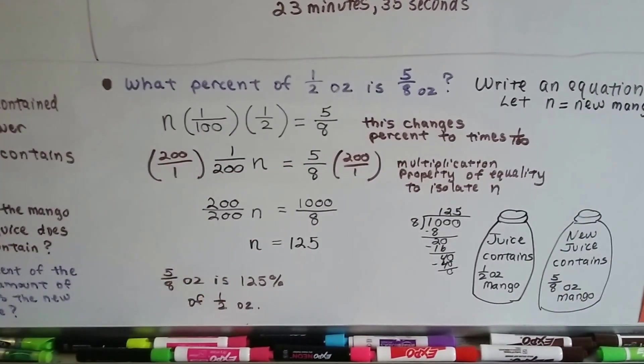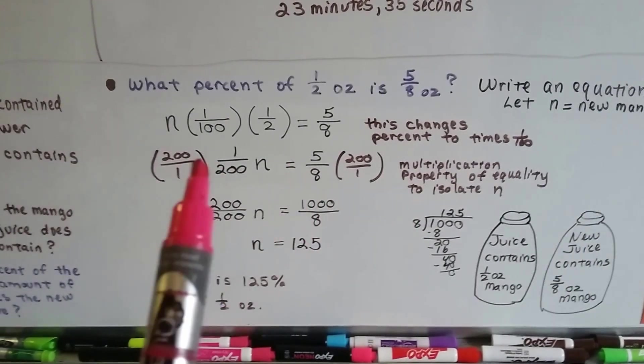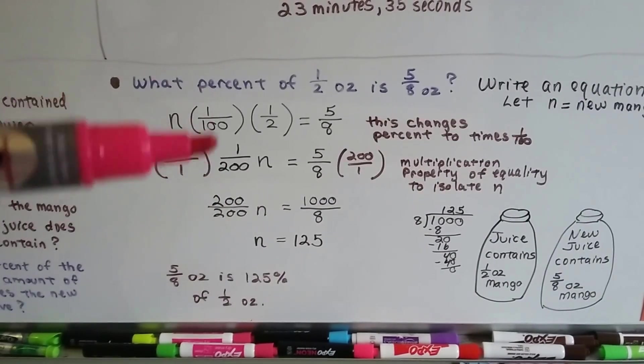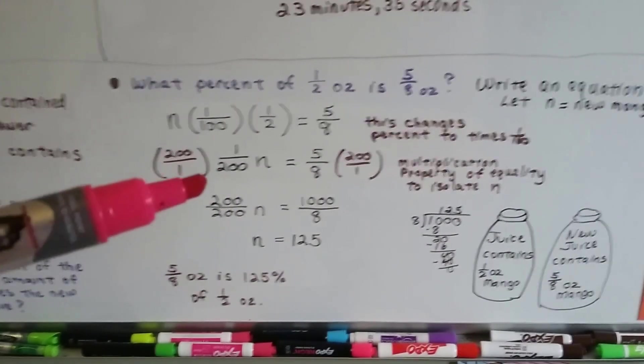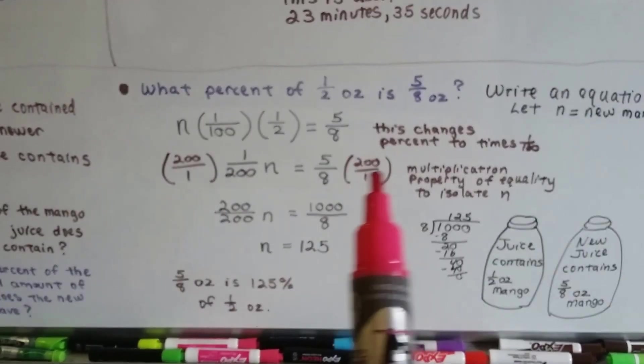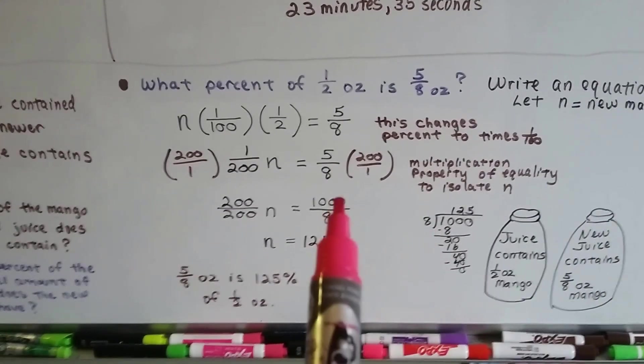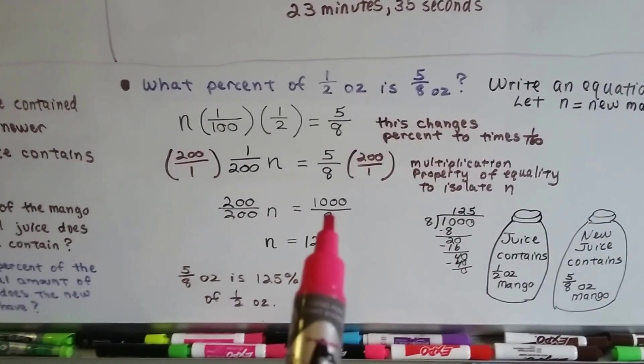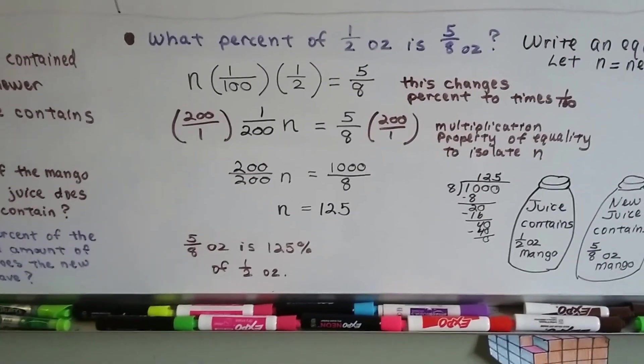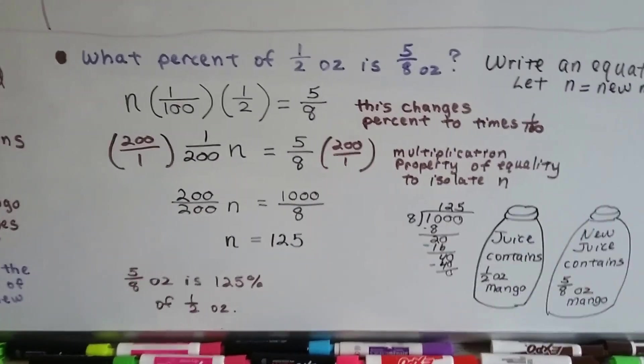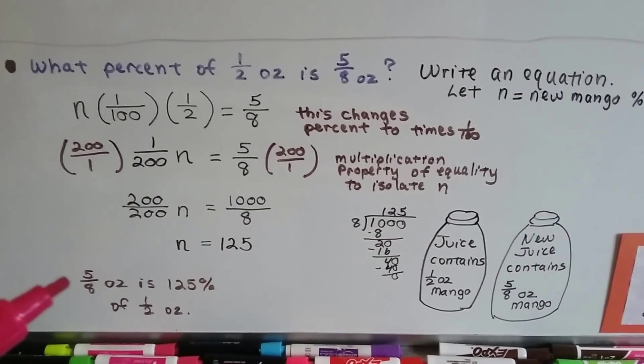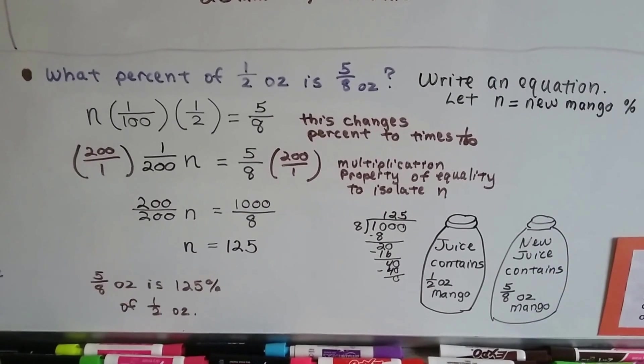Now, we can use that multiplication property of equality to isolate n that we learned in the last video. So, the reciprocal of 1 200th is 200 over 1. We multiply both sides by 200 over 1. We get 200 over 200 n. That makes a 1, doesn't it? Because the numerator and denominator are the same. And on this side, we get 1,000 over 8. Well, 1,000 divided by 8, because that's a little division problem, isn't it? It comes out to 125. So, we know that 1 n is equal to 125. So, 5-8 ounce is 125% of a half ounce. See that? This one had a half ounce of mango. This one had 5-8 ounce of mango. The 5-8 ounce is 125% of the mango that was in this one.